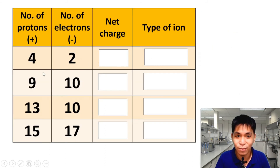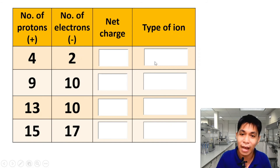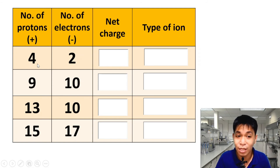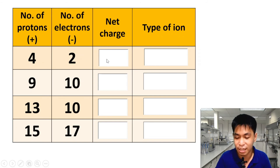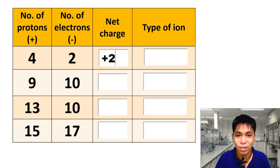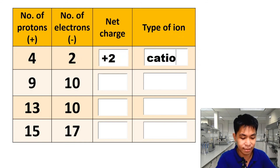Here is a set of atoms with their number of protons and electrons. Let's use these to identify the net charge and type of ion. For the first one, protons equal 4 and electrons equal 2. Protons are greater by 2, so the net charge is positive 2. Therefore, since it has a positive charge, the type of ion is a cation.